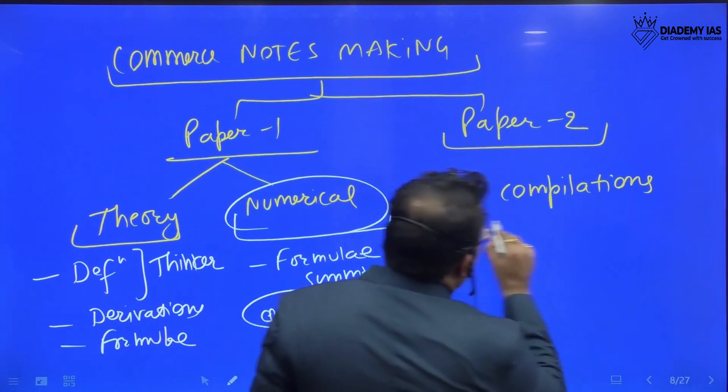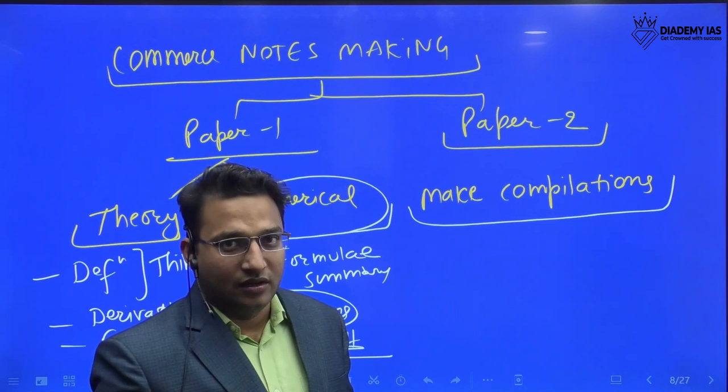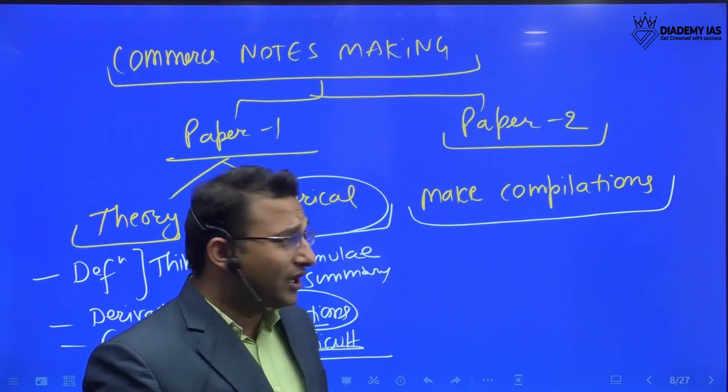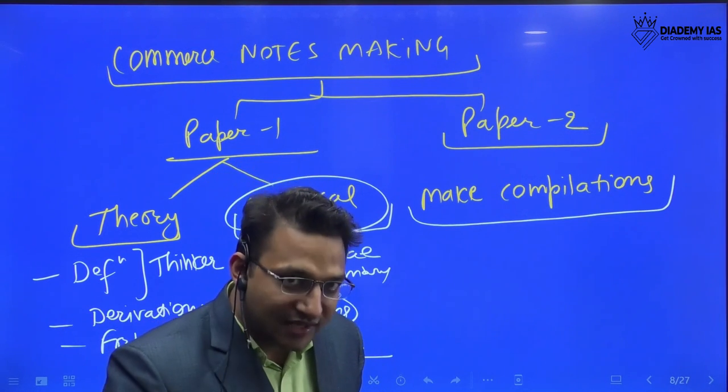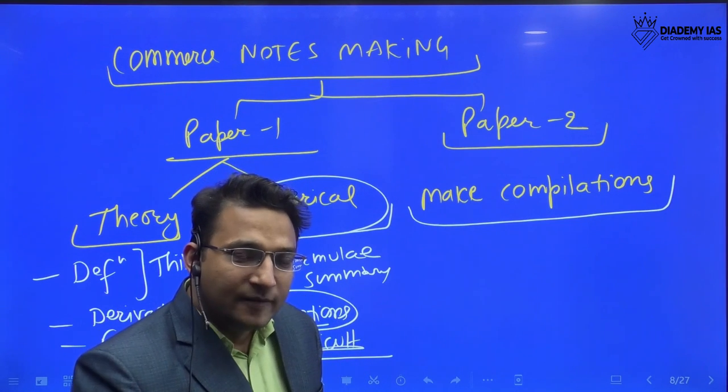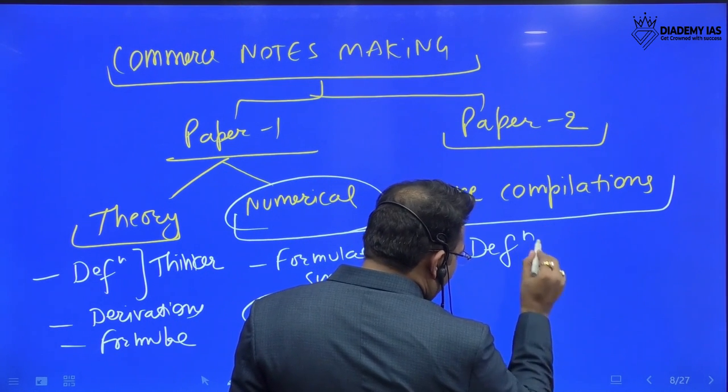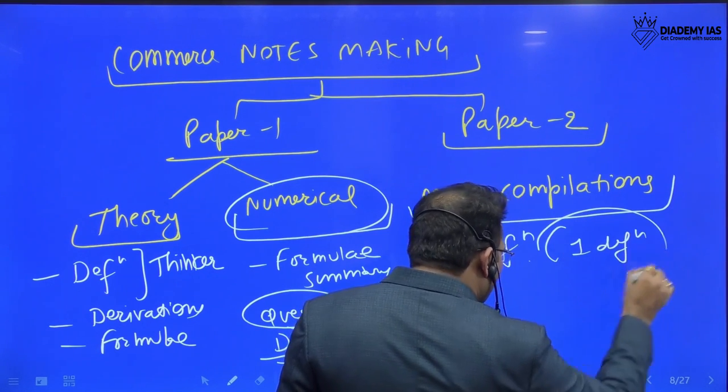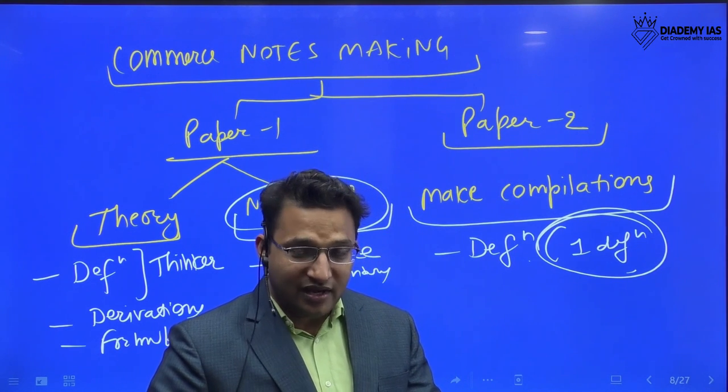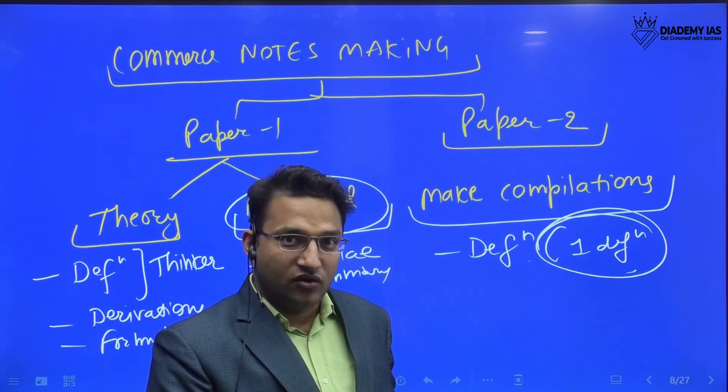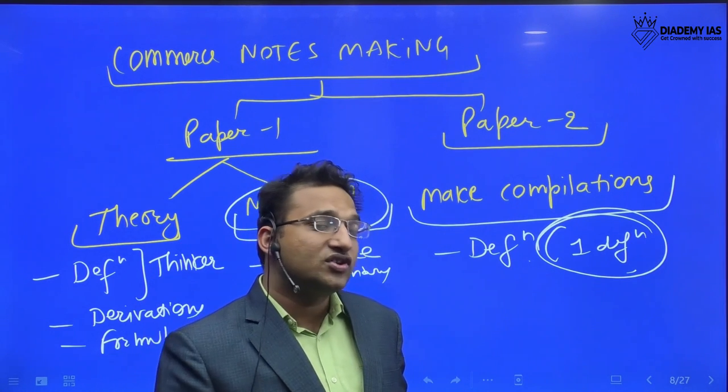Now, coming to the paper number two. In the paper number two, you have to focus on the thinkers. This is a big problem which people are making, which big mistake people are making. What mistake they are making? They are reading the paper two like GS. But this is not GS. Optional means specialization. Optional means thinkers. Optional means very, very specialized content. So, in the paper two, you have to make the compilations of the definitions. Minimum one definition of all the important terms you should remember as it is. If you are not able to remember as it is, at least try to remember the keywords. At least important keyword you should remember as it is. And in our telegram channel, we are posting these important definitions. These definitions are very authentic definition. Please try to remember.